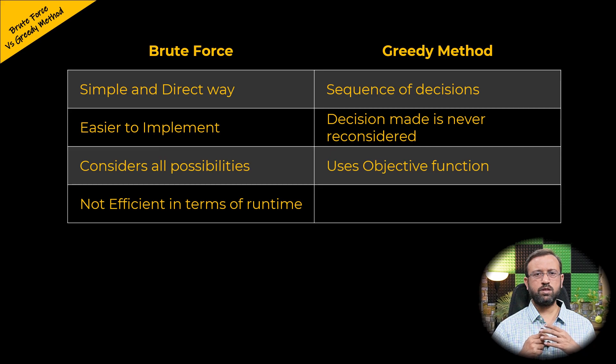The greedy method uses a function known as an objective function, which is minimized or maximized subject to constraints. Greedy algorithms can run significantly faster than brute force algorithms.